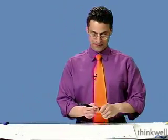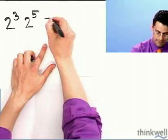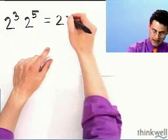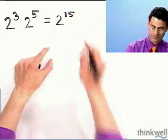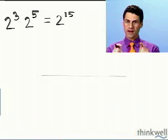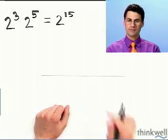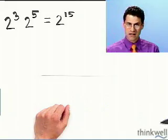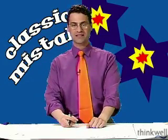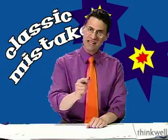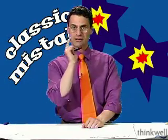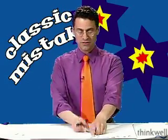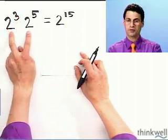A great guess — here is a super guess — would be: this equals 2, and since I'm multiplying, I multiply and get 2 to the 15th. That is a great guess, and I hope everyone makes that guess right now and then never makes that guess again. Because in fact, this is a classic, classic mistake. It's number 6 on my list of classic mistakes: the exponent mistake — multiplying the exponents when you're multiplying the numbers. That is actually incorrect.